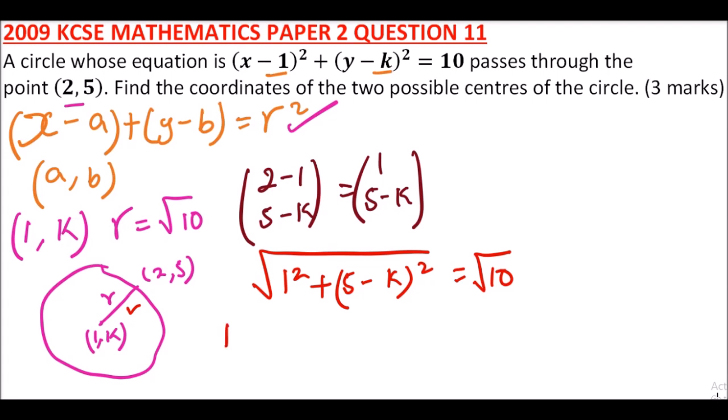When you expand this you'll get 25 - 10k + k² = 10. When you rearrange your equation properly, you'll be able to get k² - 10k + 16 = 0.